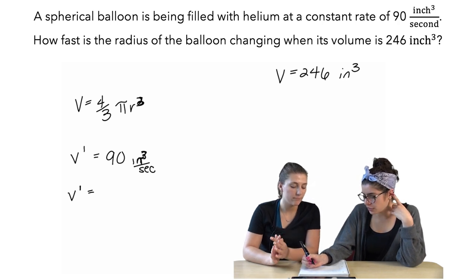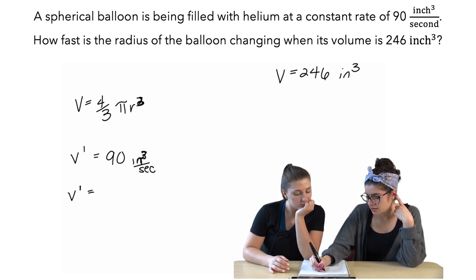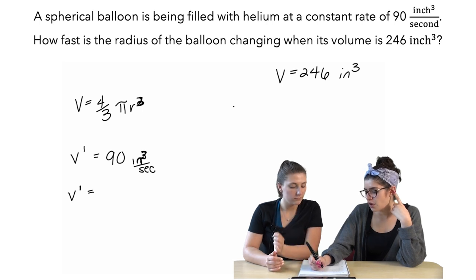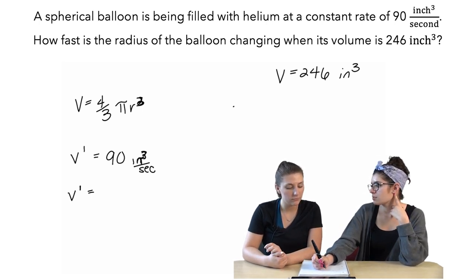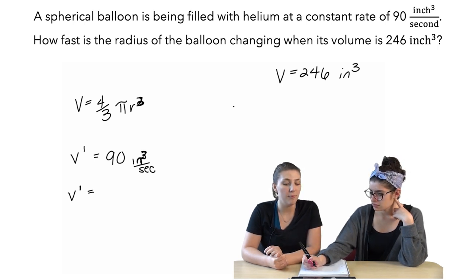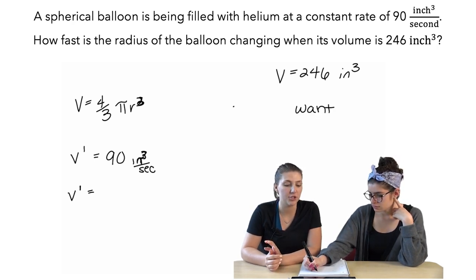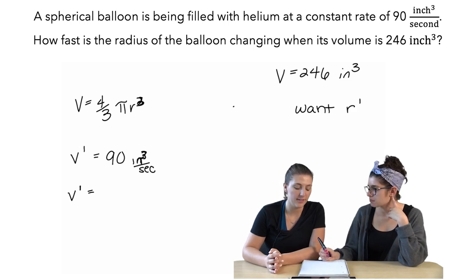Well, I mean, if we know that the volume is 246, we can solve for r, but what do we want in the end? We want to know how fast the radius of the balloon is changing. Okay. So, we want r prime? Yes. Okay.